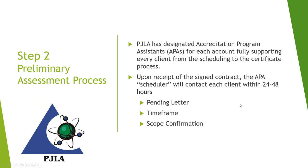Step two: the preliminary assessment process. Once you've committed to PGLA as your accreditation service provider, your paperwork will be submitted to a designated Accreditation Program Assistant — the acronym is APA. These assistants help our clients from start to finish. Your APA will contact you with your application, a timeline from what you told the project manager, and will send you that pending letter based on when you think you're going to become accredited.